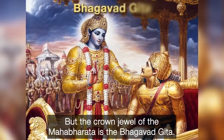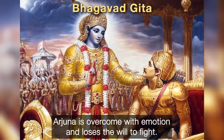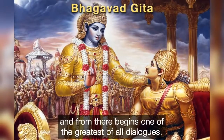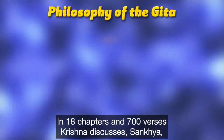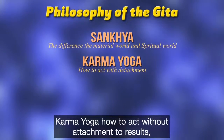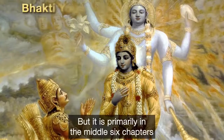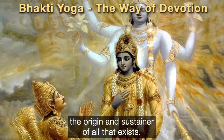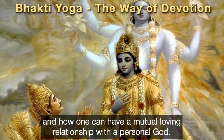The crown jewel of the Mahabharata is the Bhagavad Gita. When faced with the prospect of destroying the Kauravas and the rest of his family, Arjuna is overcome with emotion and loses the will to fight. He surrenders to Krishna, who has taken the role of his charioteer, and from there begins one of the greatest of all dialogues. In 18 chapters and 700 verses, Krishna discusses Sankhya — how the eternal soul is different from the material world — Karma-yoga, how to act without attachment to results, and Dhyana-yoga, how to still the mind in meditation. But it is primarily in the middle six chapters that Krishna explicitly talks about himself as the Supreme Lord, the origin and sustainer of all that exists, and teaches Arjuna the way of Bhakti-yoga and how one can have a mutual loving relationship with a personal God.